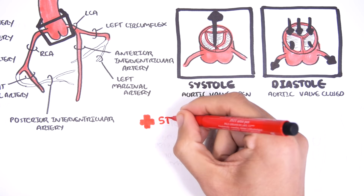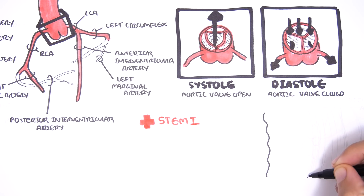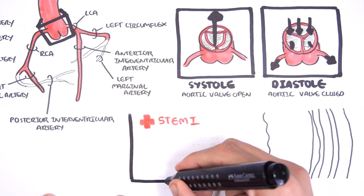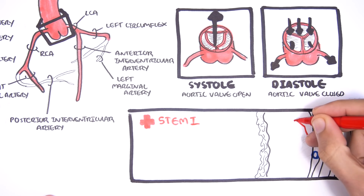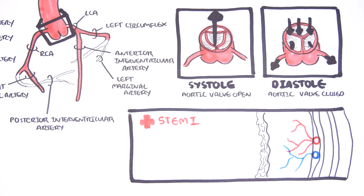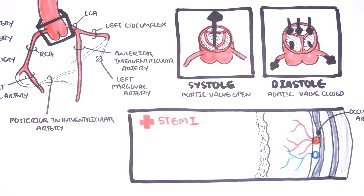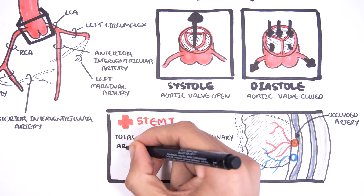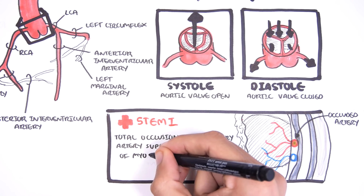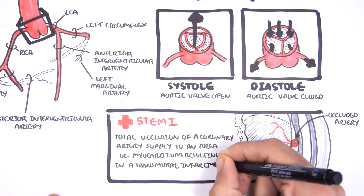The most serious form of acute coronary syndrome is a STEMI — an ST elevated myocardial infarction. Here I'm drawing the layers of the heart, and here you have your coronary artery in red and your coronary veins in blue, which are below the pericardium. These coronary arteries normally supply the myocardium. However, if there is an occlusion in the artery you can get an infarction of the myocardium. A STEMI is where there is total occlusion of the coronary artery supplying an area of the myocardium, resulting in a transmural infarction.